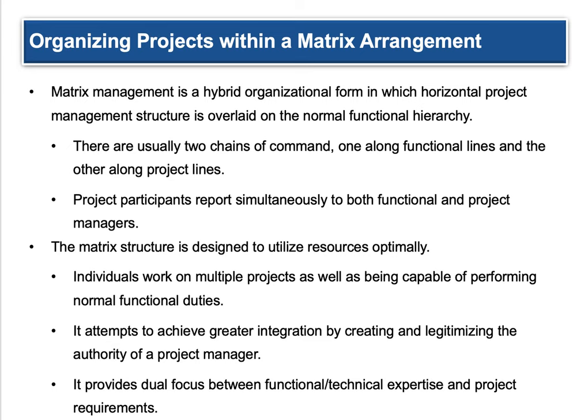Organizing projects with a matrix arrangement: matrix management is a hybrid organizational form in which a horizontal project management structure is overlaid on the normal functional hierarchy. There are two chains of command — along functional lines and along project lines — so you'll see cross responsibilities. A lot of people see it as "I've got two bosses now," which can be a negative or actually pretty awesome. Project participants report simultaneously to both the functional and project managers — that's the two-boss part. The matrix structure is designed to utilize resources optimally, focusing on using time and money wisely.